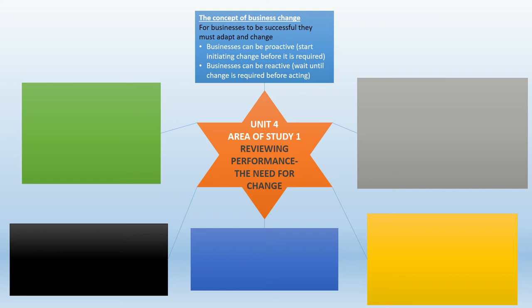By taking the lead, businesses can gain a competitive edge over their rivals. Being proactive also means the business can carefully plan for the implementation of the change. Whereas the other option — to be reactive, to wait until the change is necessary before acting — can show that a business is slow to act and can put them at a disadvantage compared to their competitors. Being forced to make a reactive change also means they have less time to carefully plan for the change's implementation.